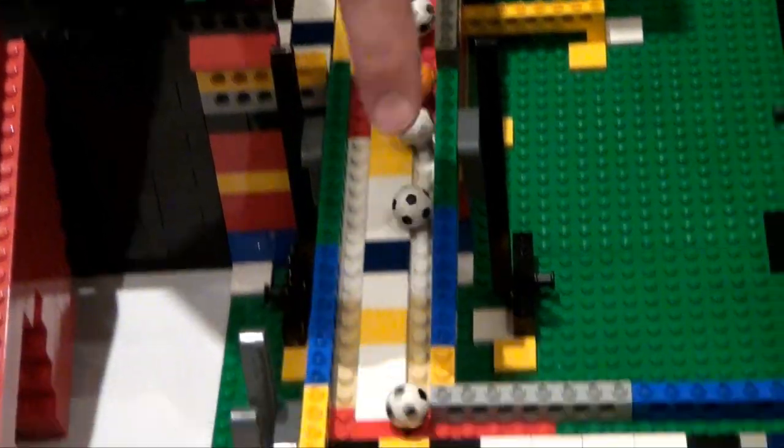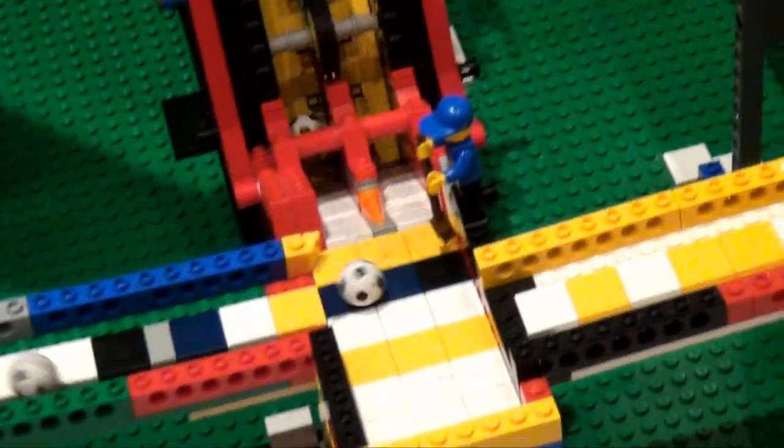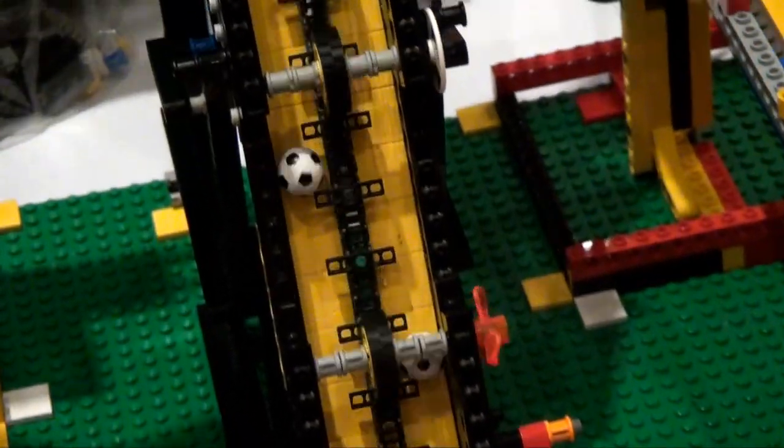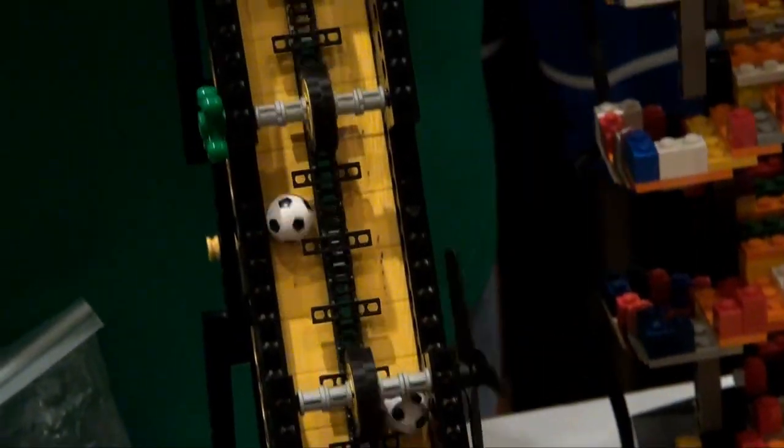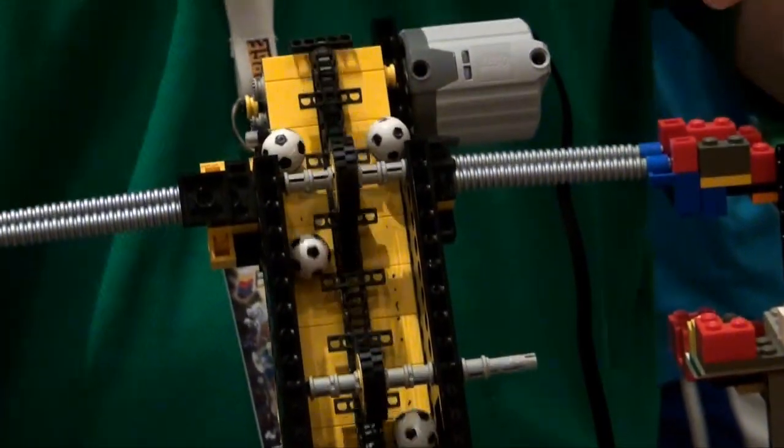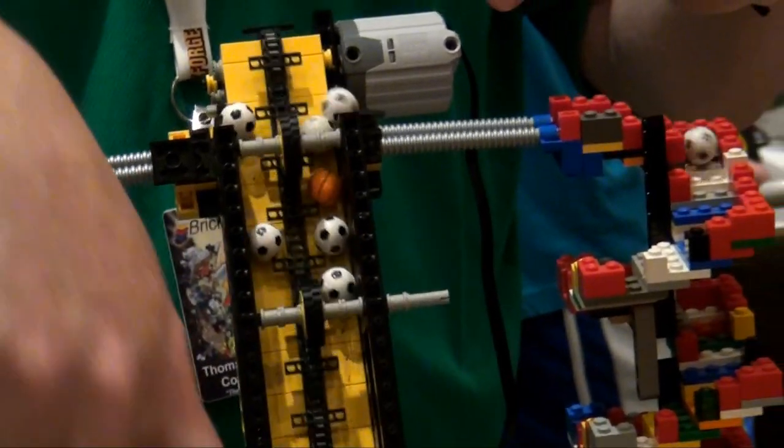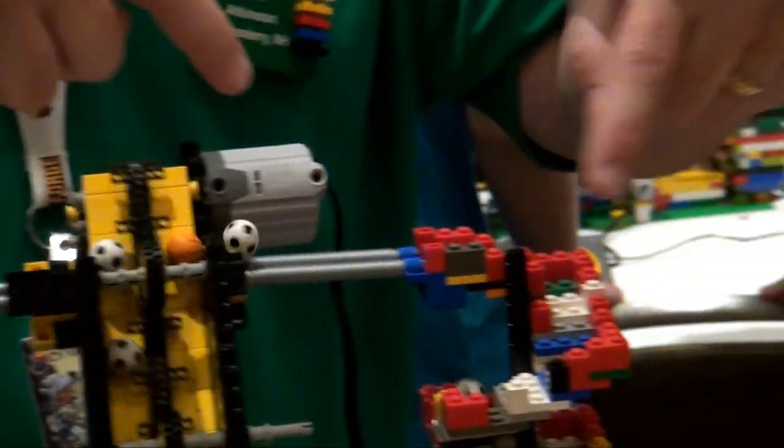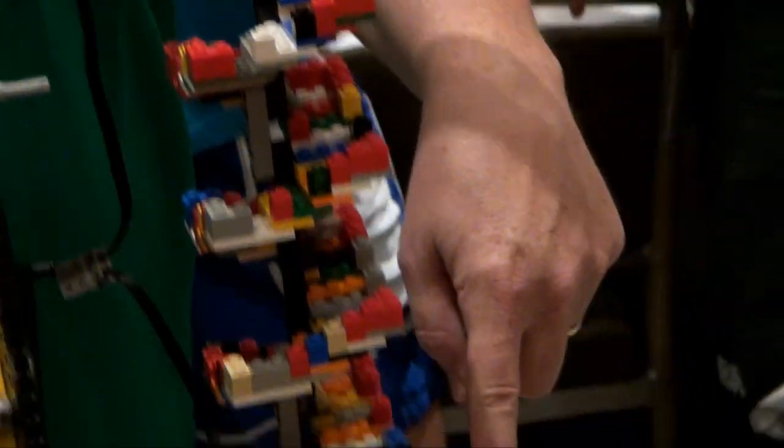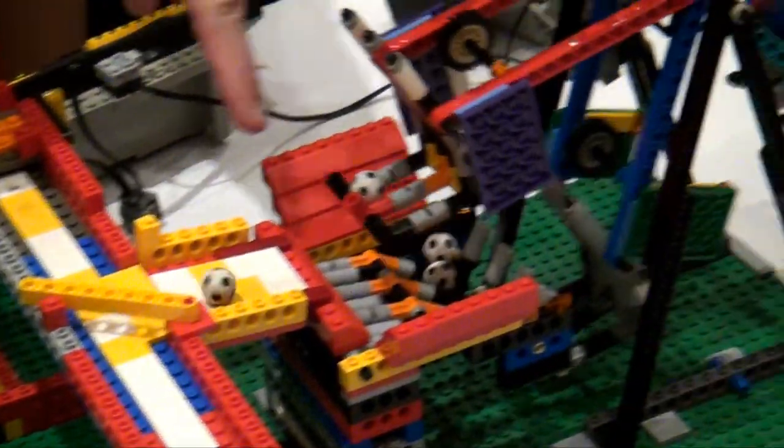They come into this module which pumps them a group at a time into this module. And this module allows them to flow down and then they come up this conveyor and when they get to the top of the conveyor they can go two ways. And the ones that come this way circle back down and go around again.